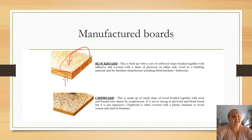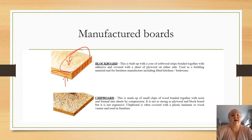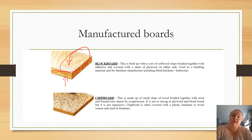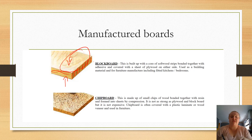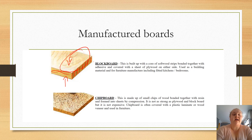Blockboard is covered with a sheet of plywood on the top and is most often used as a building material. It is a little bit cheaper than solid wood and better for building because it comes in much bigger sizes. Because it isn't natural, you can make it a lot bigger — you aren't stuck to the size of a tree trunk.